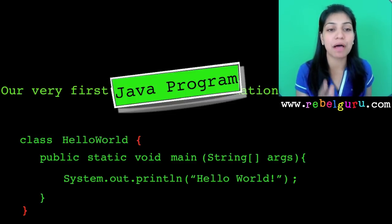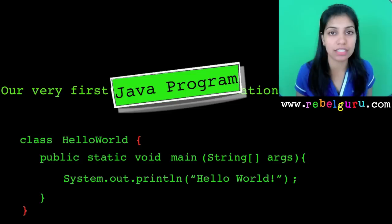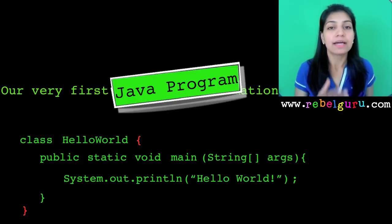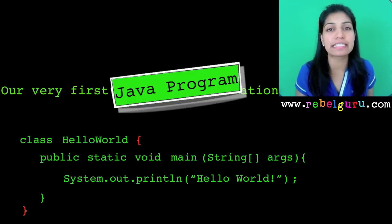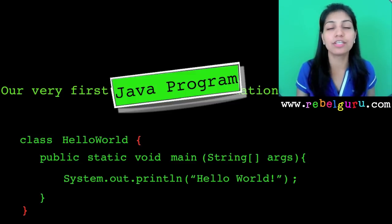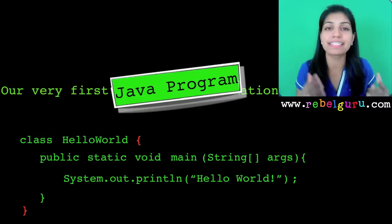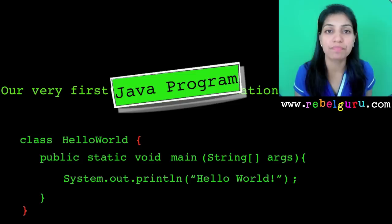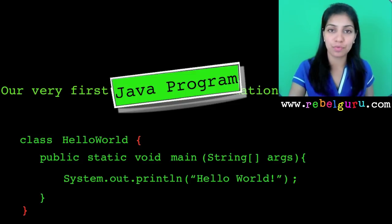Alright, let's move on to the next line: 'public static void main(String[] args)'. This is part of the class called HelloWorld. The first three words — public, static, and void — are used to describe the main method. Think of them as adjectives to the main method. The main method is public, the main method is static, and the main method is void. Let's look at each of these adjectives one by one.